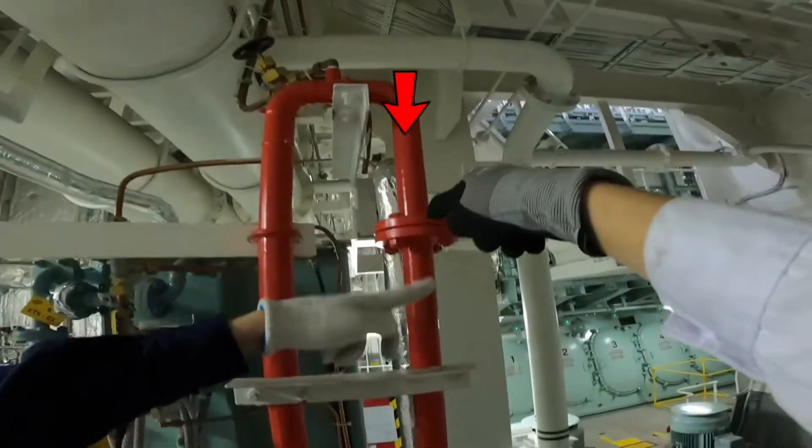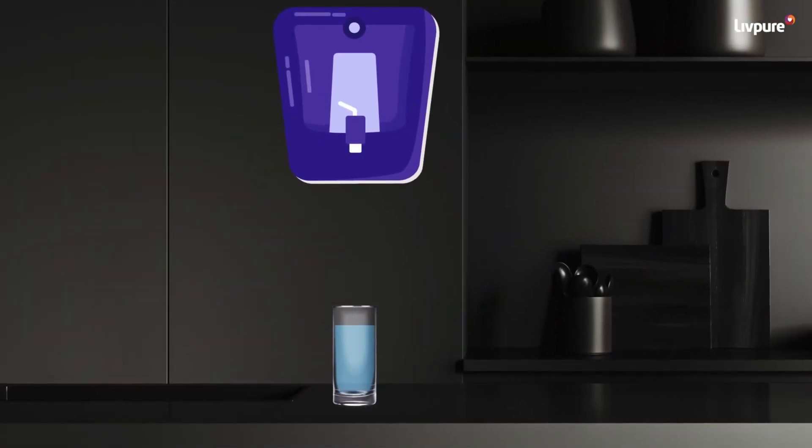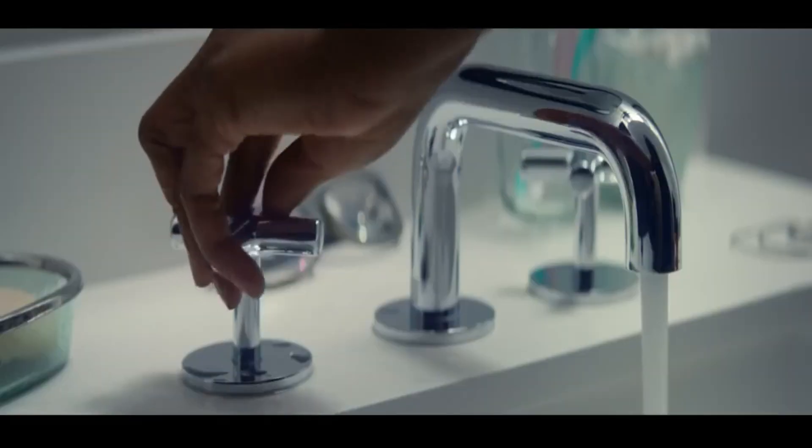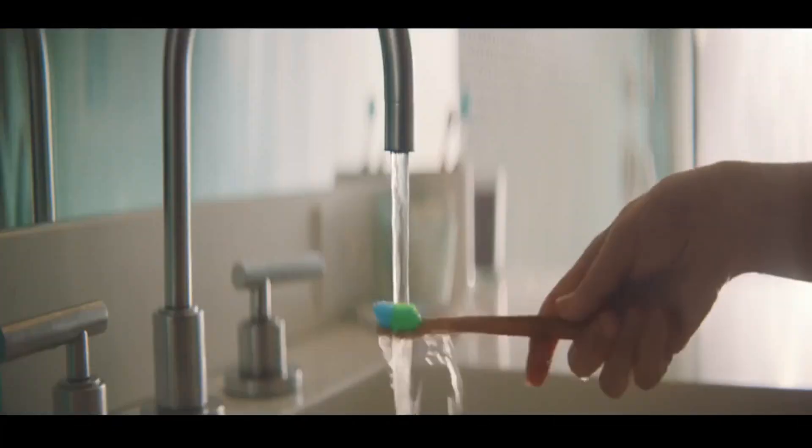There are typically two types of fresh water produced on a cruise ship. Potable water, which is safe for drinking, and non-potable water used for all other purposes, such as showering, flushing toilets, and cleaning dishes.